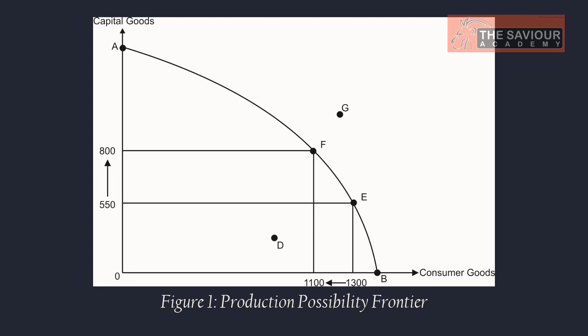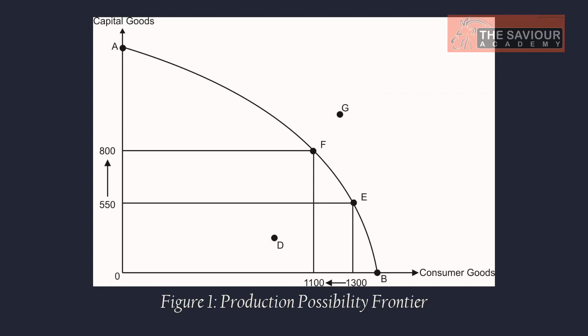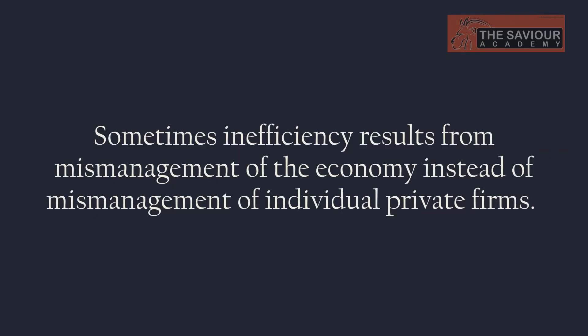The second concept drawn from the PPF is inefficiency. Although an economy may be operating with full employment of its land, labor, and capital resources, it may still be operating inside its PPF at a point such as D — it could be using those resources inefficiently. Sometimes inefficiency results from mismanagement of the economy rather than mismanagement of individual private firms.